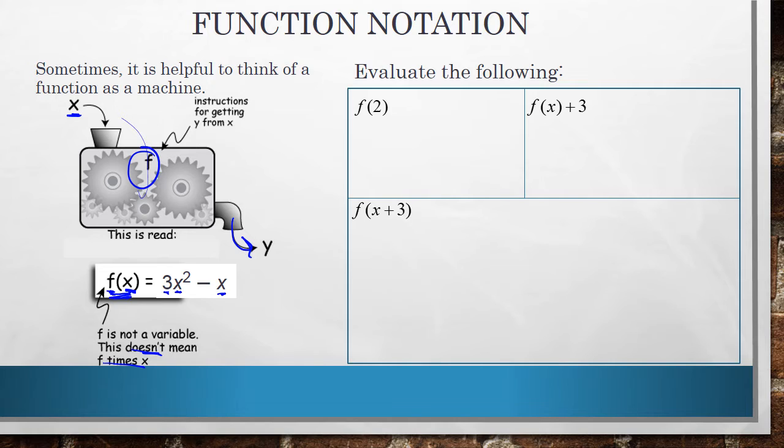So when we get into function notation, when you see things like f of 2, what that's meaning is to go to your function, and anywhere you see an x value, you're replacing that x value with this 2. So when I do that, I go to my function, anywhere I see an x, I replace it with a 2. Now, evaluate. There's a little word value in there. That means we're finding a value. So we're not solving anything here, we're finding a value of a function.